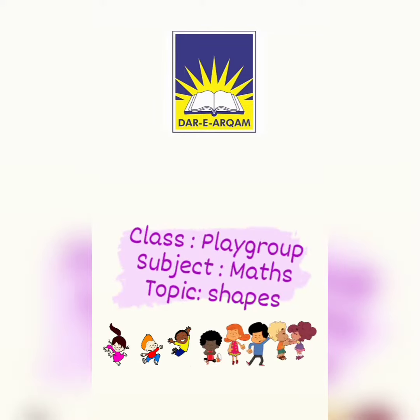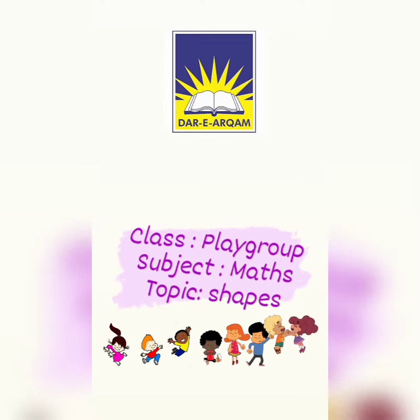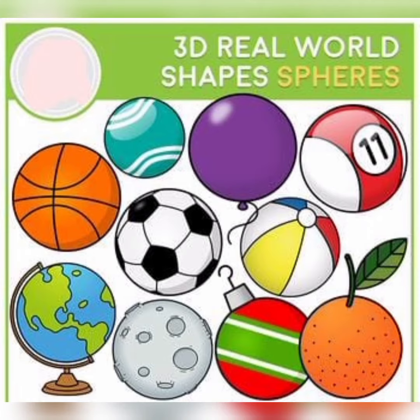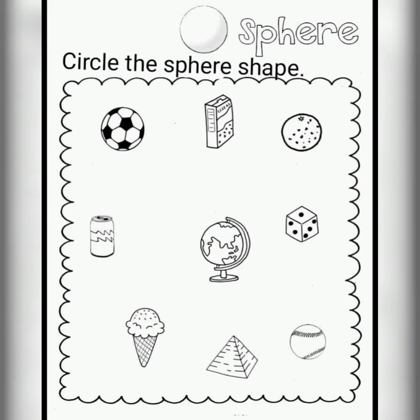Assalamu alaikum class. Today we are going to revise the shapes in maths. We have already done this shape of a sphere, which is rounded from every side — it is just like a ball. There can be different things of sphere shape, like a balloon, ball, orange, and many other things.